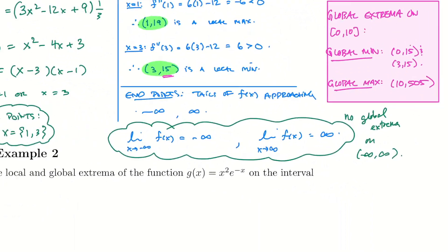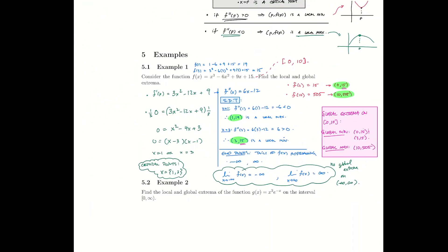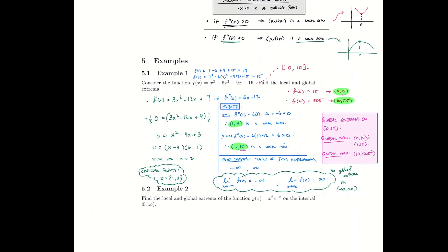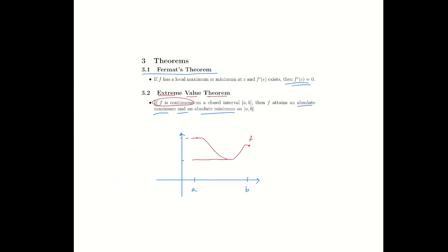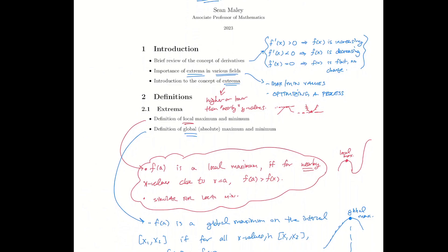Since the original problem asked about the whole real line, we say there is no global extrema. I'll have more worked problems in the module, but I hope this gives a good overview of the procedure — why we do it, grabbing critical points as candidates, using either derivative test to classify them, and then if looking for global extrema, comparing those values to confirm what's the highest or whether an endpoint beats a local extremum. You want this process to become more automatic so that when we apply it to optimization problems, you won't have to think too hard about it. I look forward to your questions and we'll see you in the discussion.